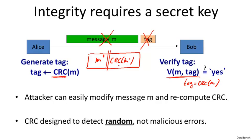The problem is that because CRC doesn't have a key, there's no difference between Alice and the attacker, and as a result Bob doesn't know where the message came from. Once we introduce a key, Alice can do something the attacker can't, and she may be able to compute a tag that the attacker can't forge. The point to remember is that CRC is designed to detect random errors, not malicious errors — whereas our goal is to make sure that even a malicious attacker cannot modify messages en route.